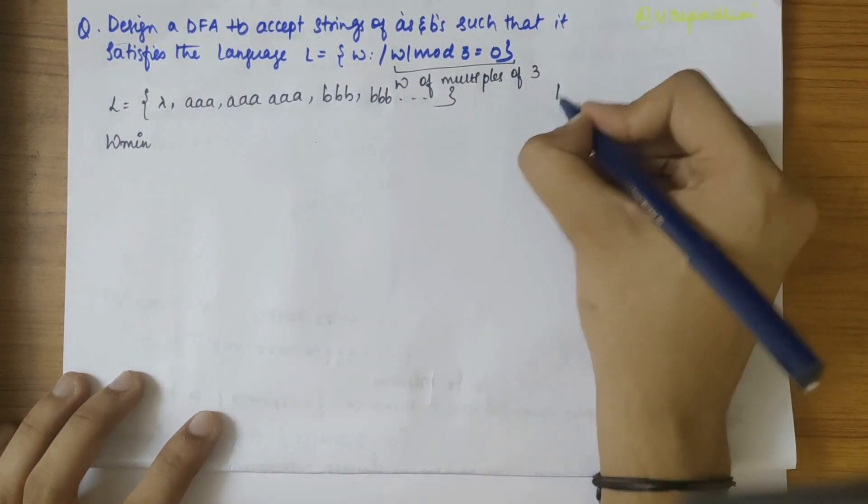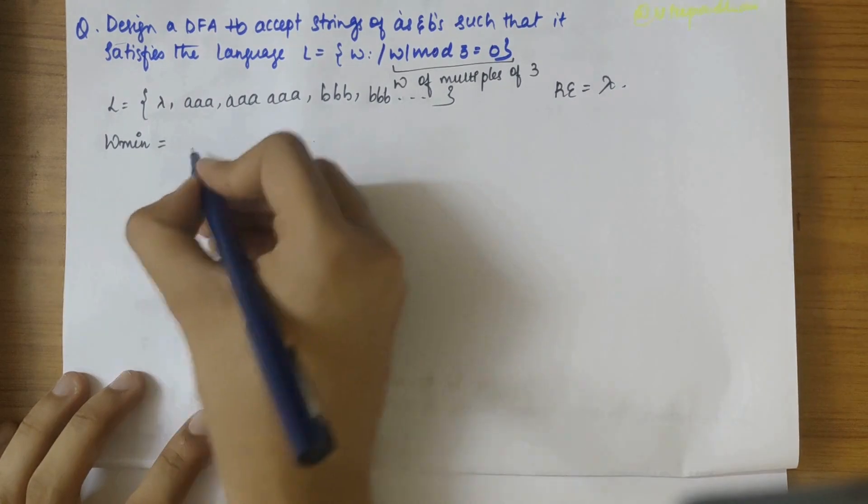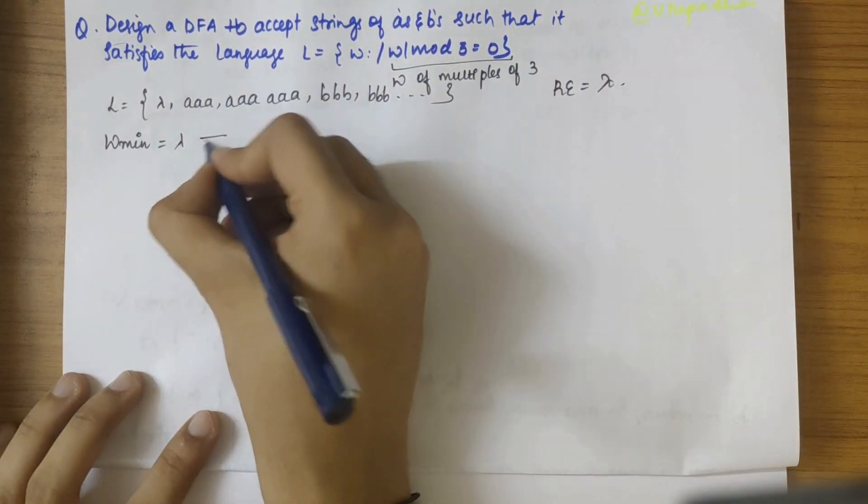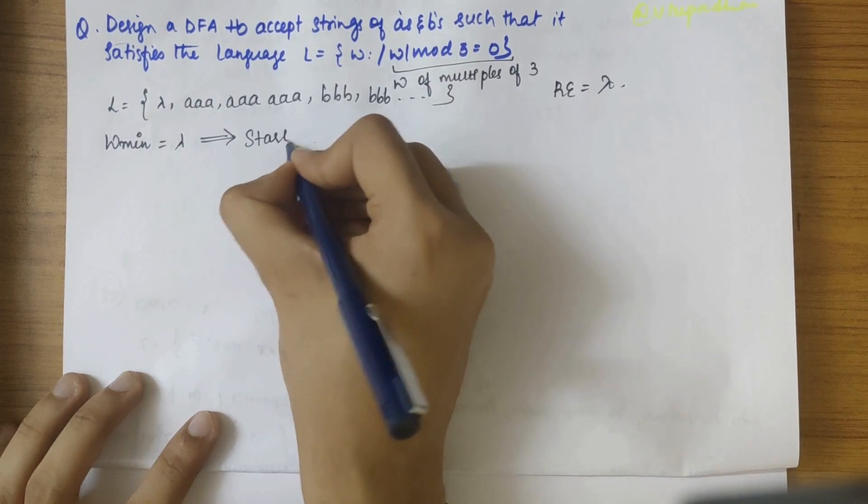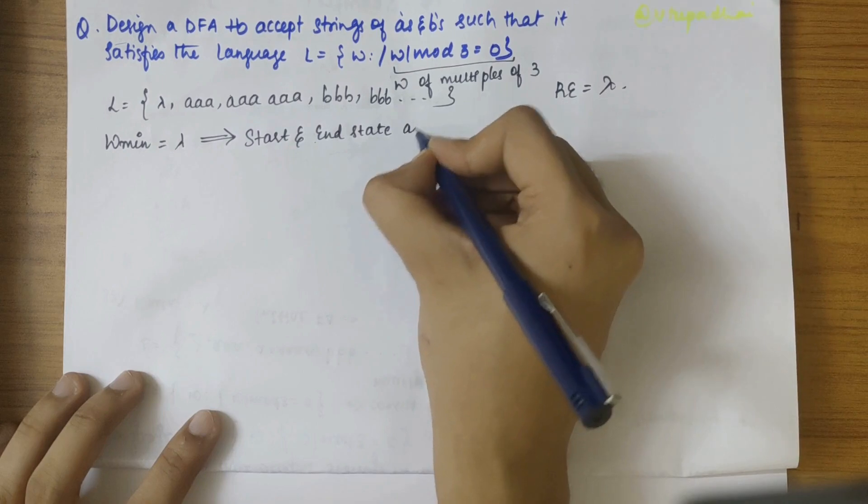So we can state that the regular expression will be lambda itself. So when the regular expression is lambda, the W min will also be lambda. So when W min equals lambda, we can say that the start and end state are same.